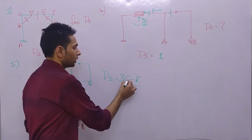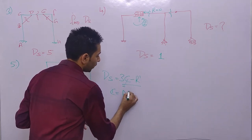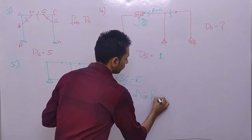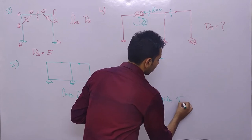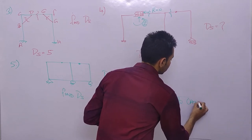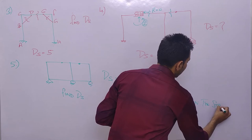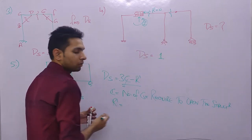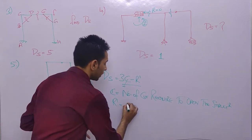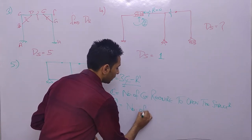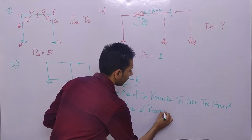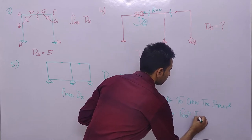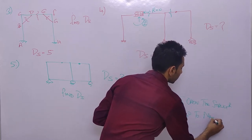In the formula ds = 3c − r', c is the number of cuts required to open the structure, and r' (or r) is the number of restraints required to make the structure rigid.